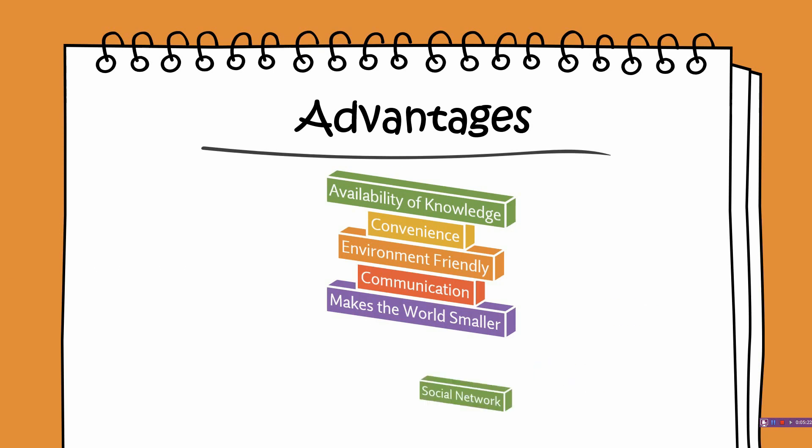Next comes social network. Networking on the net to form virtual relationships and communities helps people stay connected. They can greet, chat, video chat, pass comments, share information and pictures, give opinions, and more with the help of the internet.